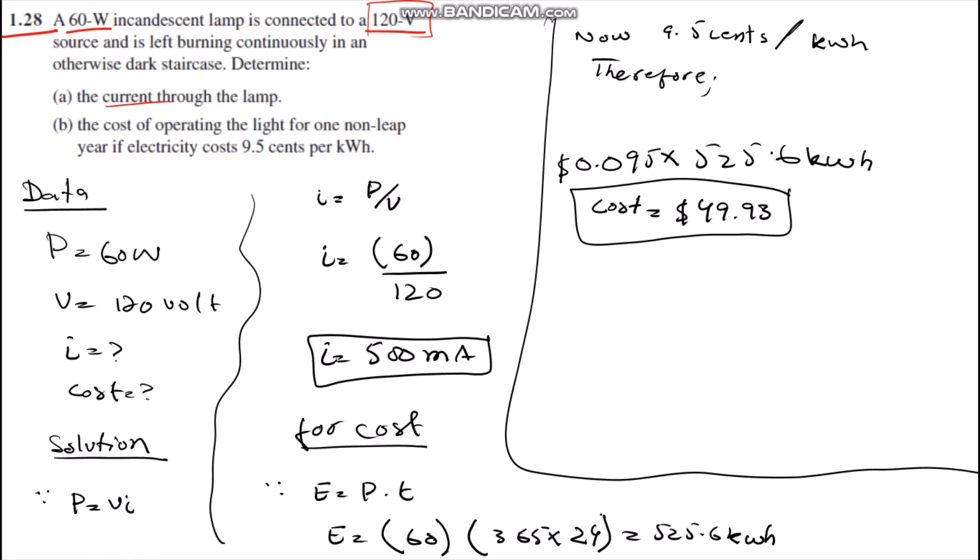We know the formula of power, which is P equals V times I, so I equals P over V. Substituting the values of voltage and power, we get 500 milliamperes. This means the bulb absorbs 500 milliamperes in order to illuminate itself.